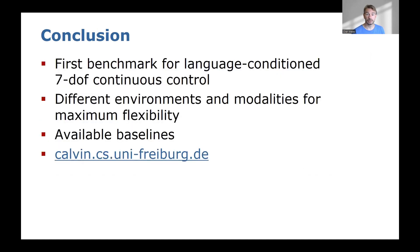To conclude, CALVIN is the first benchmark for language-conditioned seven-degree-of-freedom continuous control and offers different environments and modalities for maximum flexibility. We hope CALVIN will open the door for future development of agents that can relate human language to their perception and action and generalize abstract concepts to unseen entities in the same way humans do. Please check our project page at calvin.cs.uni-freiburg.de if you're interested in knowing more about this benchmark.